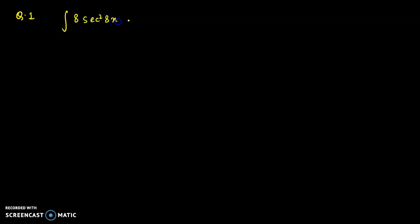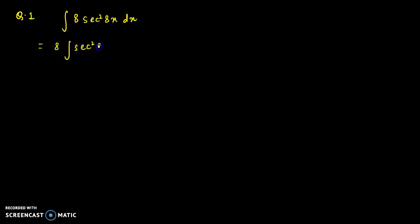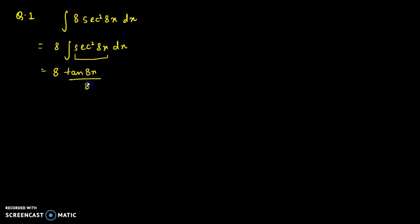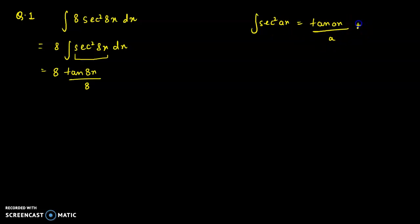Integration of sec²(8x) dx. You can pause the video and try it yourself. 8 is a constant. The differentiation of tan x is sec²x, so the integration of sec²(8x) is tan(8x) divided by 8, because the 8 inside comes to the denominator. The answer is tan(8x)/8 + c.